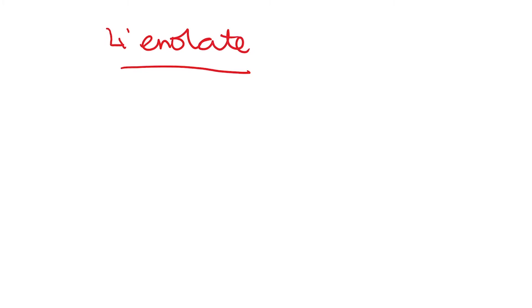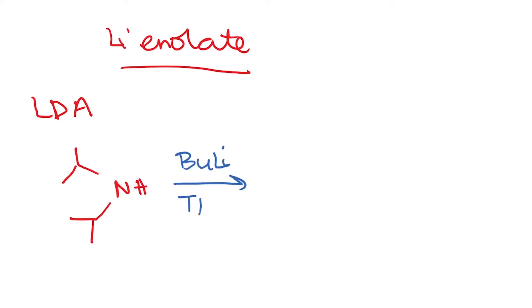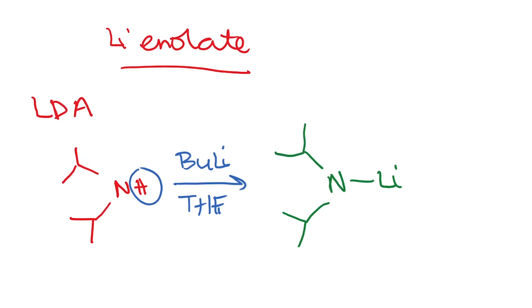The first example of a specific enol equivalent is a lithium enolate. What we do here is start with a molecule called LDA. This is diisopropylamine, and when I react this with butyl lithium in THF, the proton is abstracted and we end up with N-Li — this is called lithium diisopropyl amide. The by-product is butane, which I will write as BuH. This reaction is carried out at pretty low temperatures like 0°C, and LDA is a stable base.